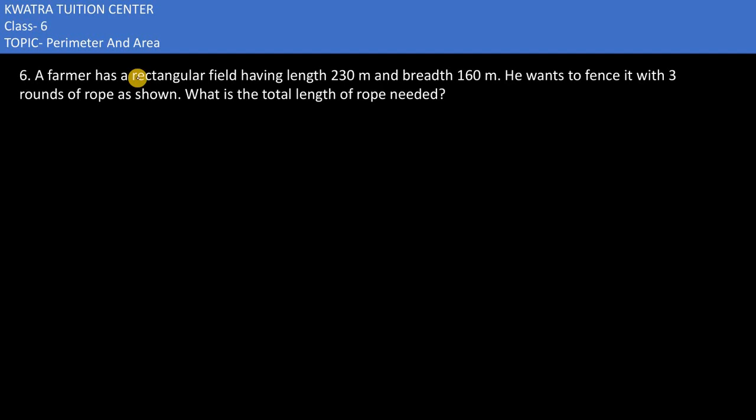In the sixth part, it says the farmer has a rectangular field having length and breadth. He wants to fence it with three rounds of rope as shown. What do we do here? There is a farmer and he has a rectangular field. How much length is it? 230. And how much breadth is it? 160.